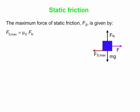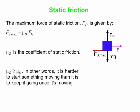The equation for the maximum possible force of static friction is: Fs max equals mu s — the coefficient of static friction — times the normal force Fn. In general, mu s is greater than or equal to, and generally greater than, the coefficient of kinetic friction mu k. So it's harder to start something moving than it is to keep it going once it is moving.